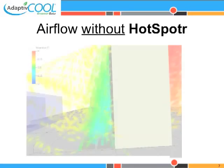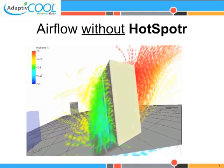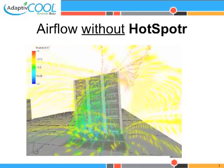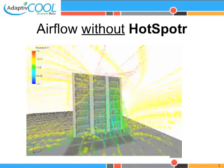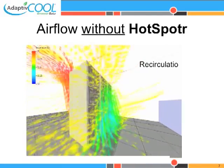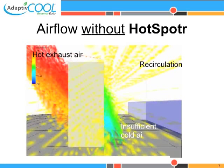In this animation showing airflow and temperature at a server rack, you can see recirculation of hot air from other areas. This is because the cold air discharged from the floor is not high enough. This also results in high exhaust air temperature.